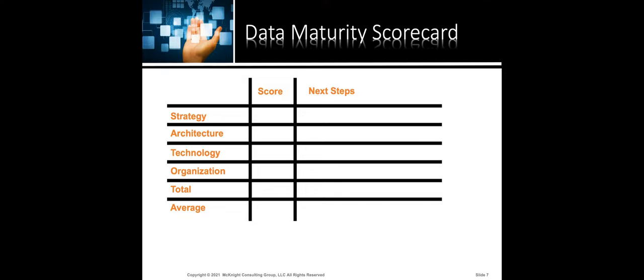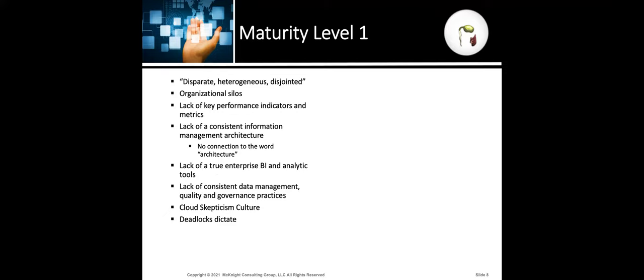For your overall score, add up the four categories and divide by four — that's your data maturity on a scale of one through five. Now let's start with maturity level one. I'm not even breaking this out by category because it's all negative — we're not doing anything — and I don't want to dwell on negativity, although I'll talk about it for a little bit.